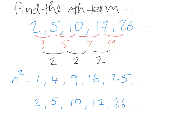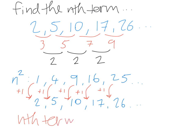We see what the difference is between each pair. To get from 1 to 2, we add 1. To get from 4 to 5, we add 1. From 9 to 10, add 1. From 16 to 17, add 1. And from 25 to 26, add 1. So our sequence 2, 5, 10, 17, 26 is very like the n squared sequence, but 1 has been added on to each term. So the nth term of our sequence is n squared plus 1.